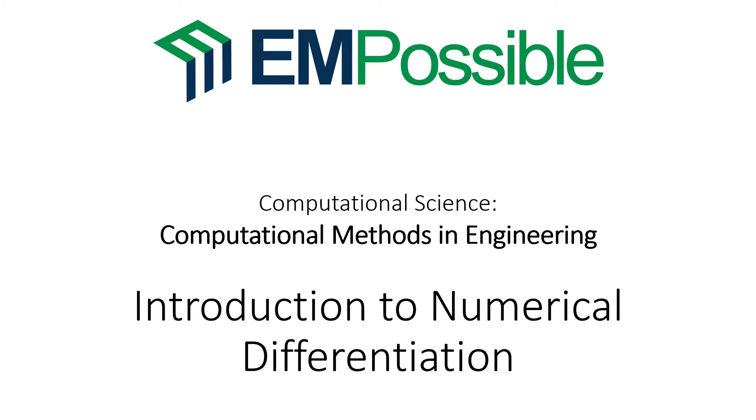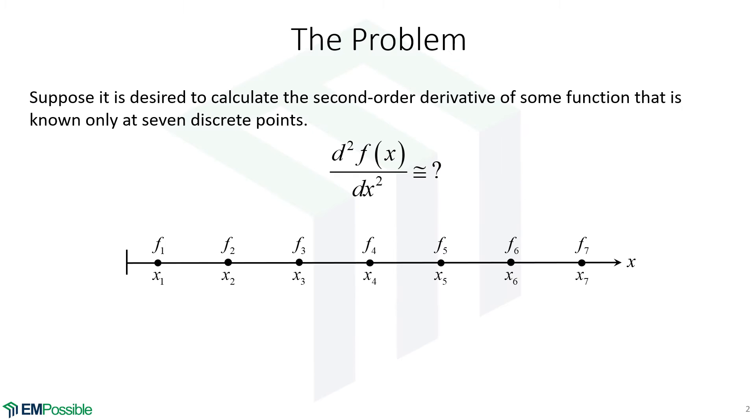Introduction to numerical differentiation. Let's say we have a function and we have stored it at seven discrete points, and we would like to calculate the second order derivative of that function. We don't have an analytical expression for this. All we know is the function at seven discrete points. How do we do this?